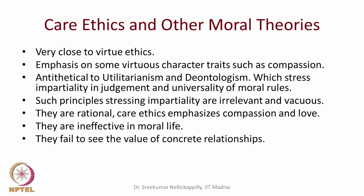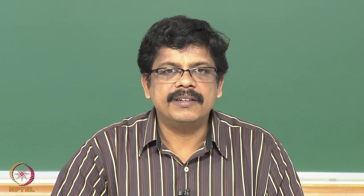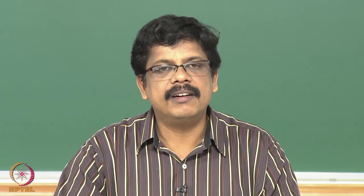These rational theories fail to see the value of concrete relationships. If both your close friend and a great scientist are in danger and you can help only one person: if you are a utilitarian you might help the scientist, but if you value compassion, love, and friendship you may opt for the other. They fail to acknowledge virtues and character traits like compassion, love, sympathy, fidelity, and friendship. What would life be without these experiences? Life would be very dry and boring. What adds meaning and value to life are compassion, love, friendship, and other forms of relationship.